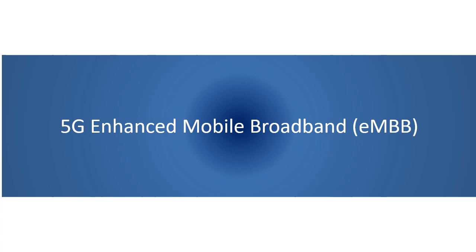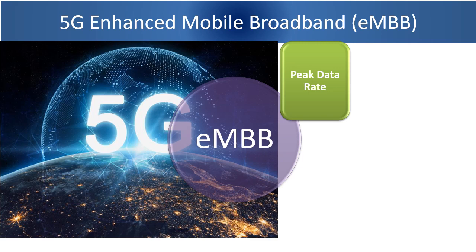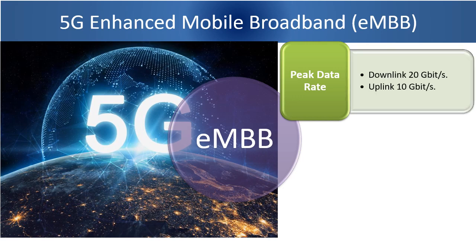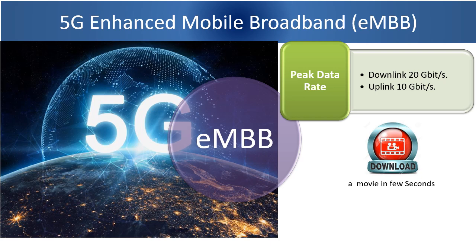5G Enhanced Mobile Broadband (EMBB). ITU had envisioned EMBB as one of the usage scenarios. The corresponding technical performance requirements of the 5G radio or air interface were defined in terms of peak data rate, spectral efficiency, user experience data rate, and mobility. The requirement of peak data rate is set to 20 Gbps for download and 10 Gbps for upload. When we use YouTube or Netflix, we download. When we post pictures or videos on social media, we upload. So that means we will be able to download a movie in a few seconds. This data rate is 20 times better than 4G.